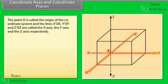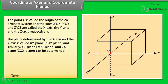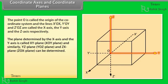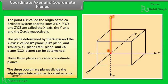The point O is called the origin of the coordinate system, and the lines x-Ox, y-Oy, and z-Oz are called the x-axis, the y-axis, and the z-axis respectively. The positive direction of each axis is indicated by arrows with thick lines. The plane determined by the x-axis and the y-axis is called the XY-plane (i.e., x-O-y plane), and similarly the YZ-plane (y-O-z plane) and ZX-plane (z-O-x plane) can be determined. These three planes are called coordinate planes. The three coordinate planes divide the whole space into eight parts called octants.